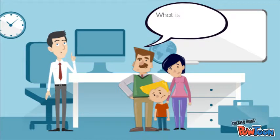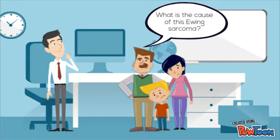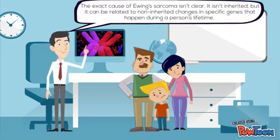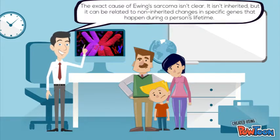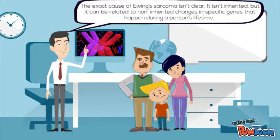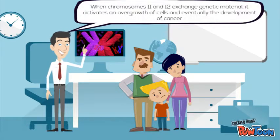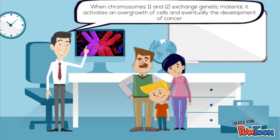What is the cause of Ewing sarcoma? The exact cause of Ewing sarcoma isn't clear. It isn't inherited, but it can be related to non-inherited changes in specific genes that happen during a person's lifetime. Exchange of genetic material between chromosome 11 and 22 is usually observed in patients with Ewing sarcoma.